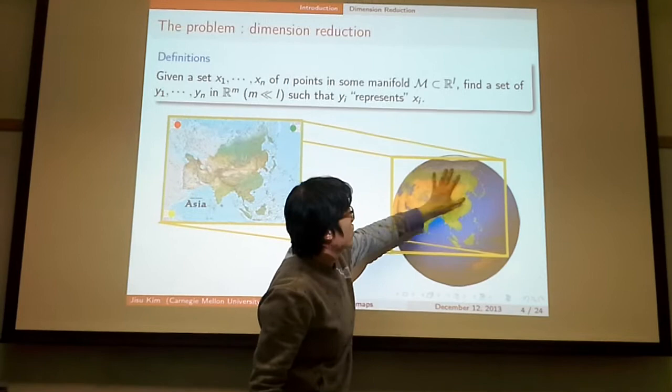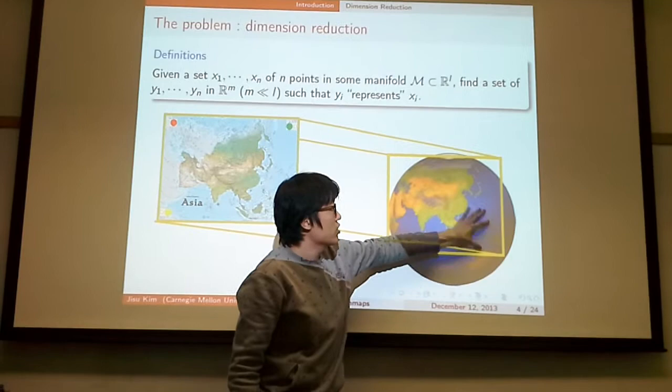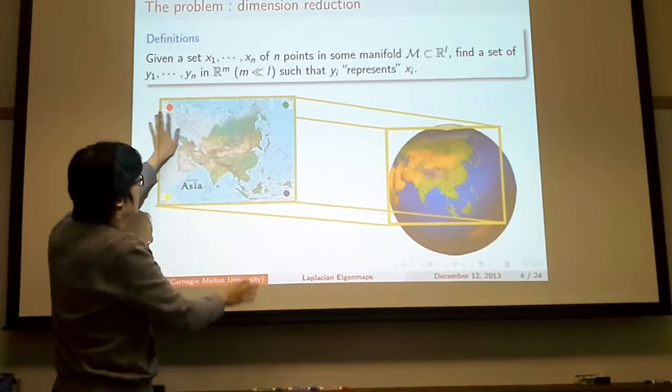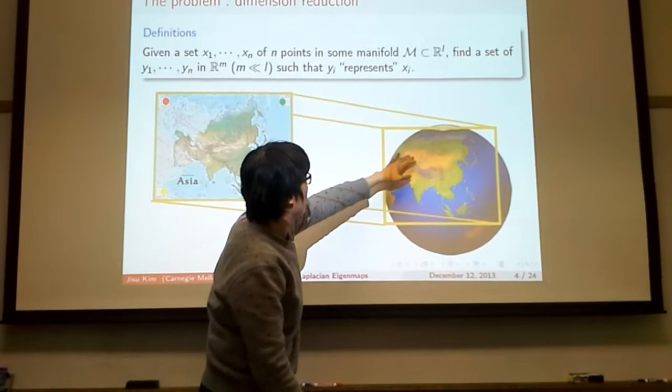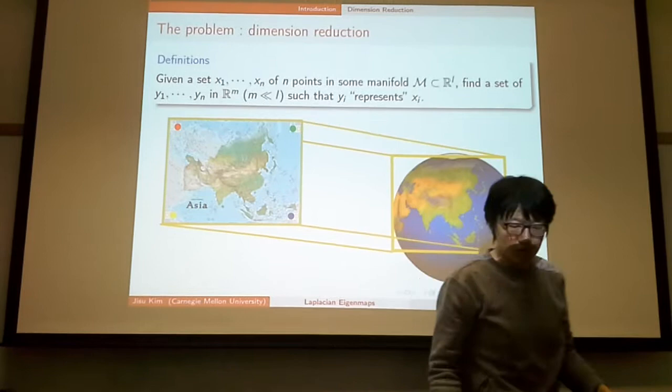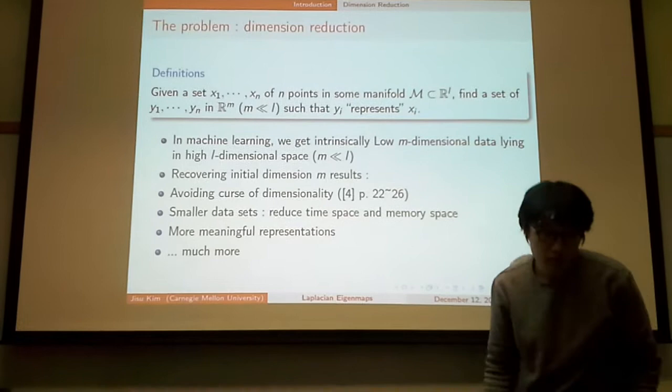Assume that xi lies on the Earth. Earth itself is a two-dimensional manifold, but it is embedded in three-dimensional Euclidean space. What we want to find is to find a two-dimensional sub-space, and find the corresponding yi that corresponds to xi, so yi represents xi. It is very similar to making a map, because a map is a low-dimensional representation of the manifold.